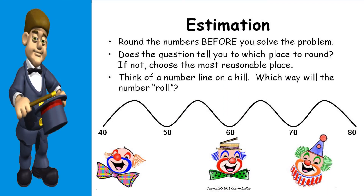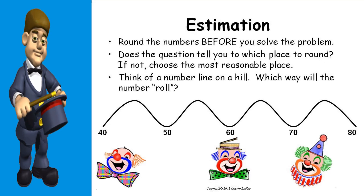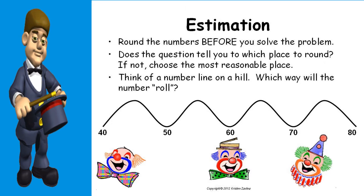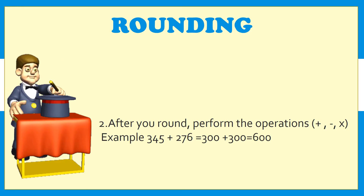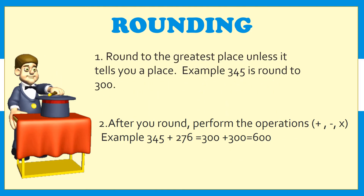Let's look at the process of estimation. You must first round the numbers before you solve the problem. Ask yourself: does the question tell you which place to round? If not, choose the most reasonable place. And last, think of a number line on a hill — which way will the ball roll? Remember, during our estimation process, we will be rounding. Step 1: round to the greatest place unless it tells you a specific place.